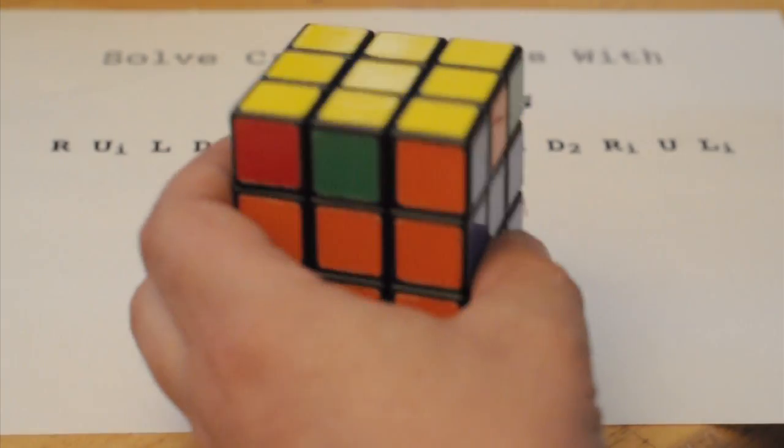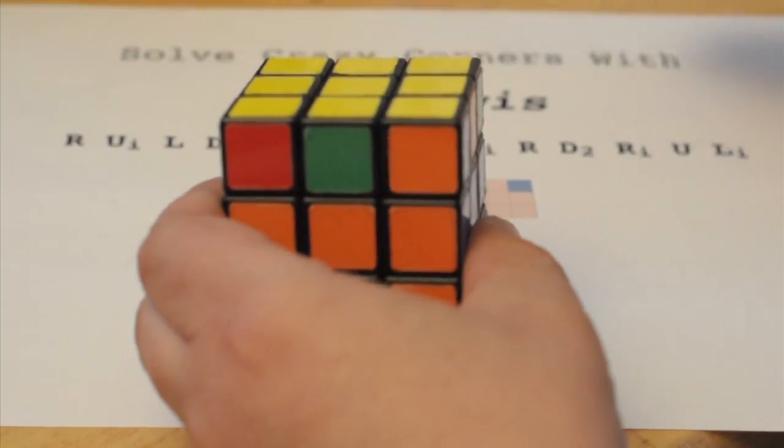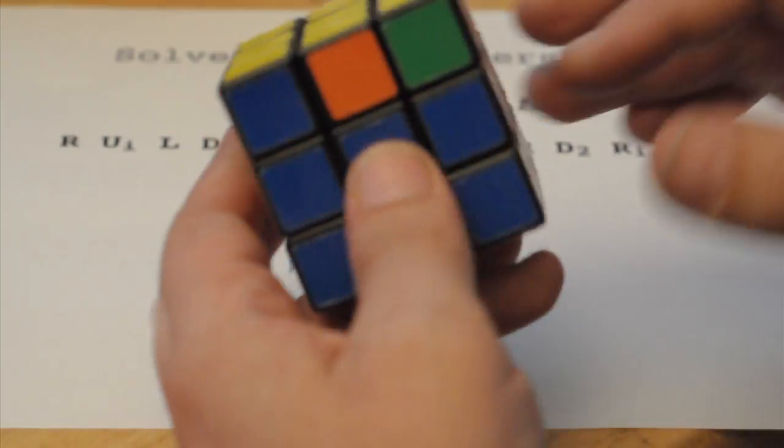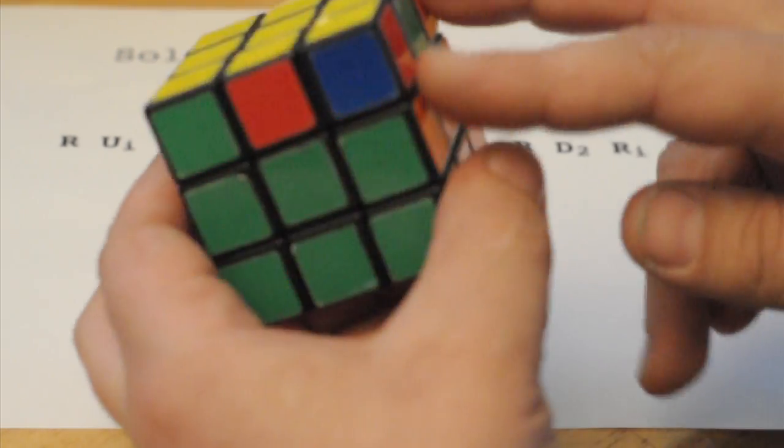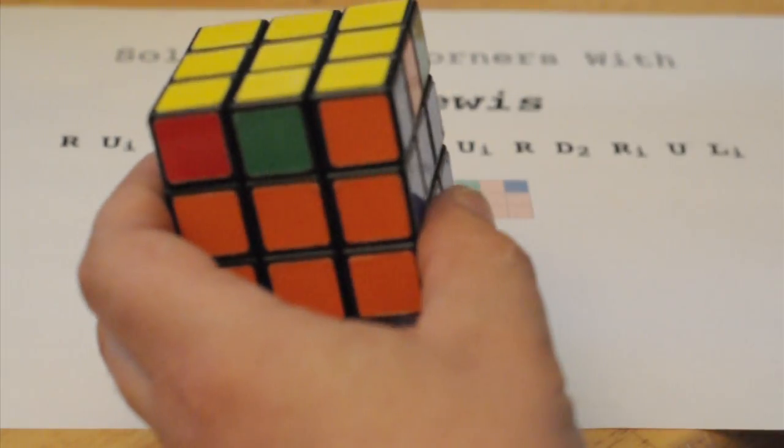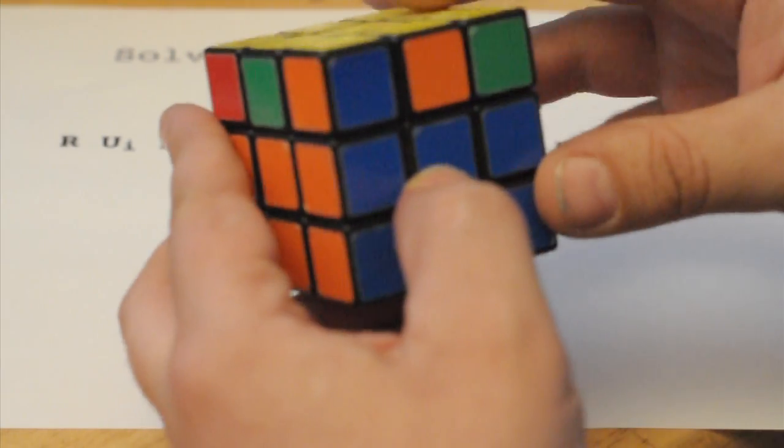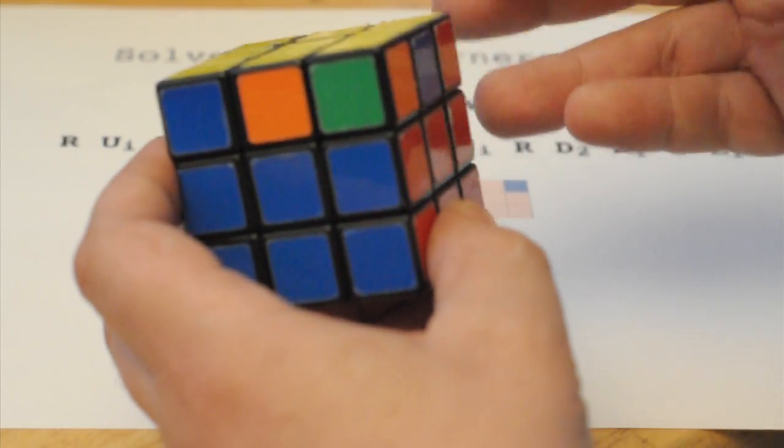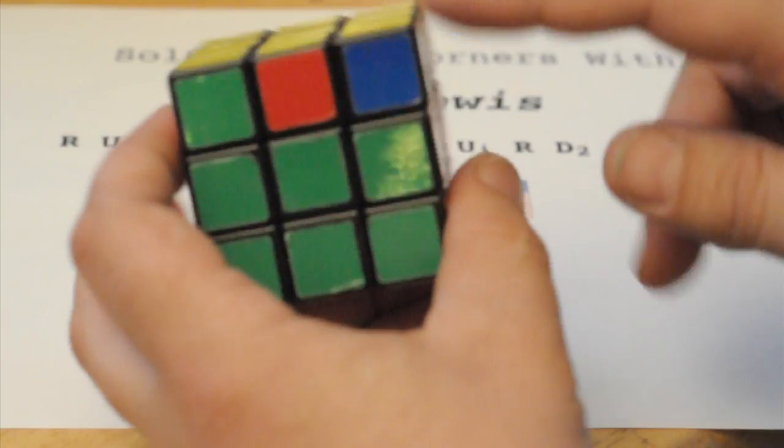It really bothered me when you did the last face of the cube. You solved that and looked at the corners and the corners were all random. You could do one algorithm and then rotate the cube and do another algorithm and you could solve this random cornerness.